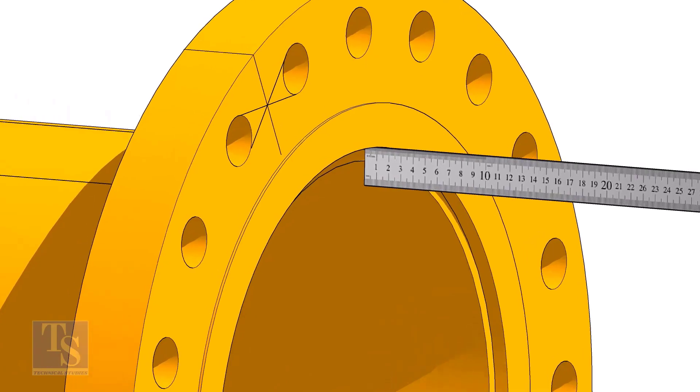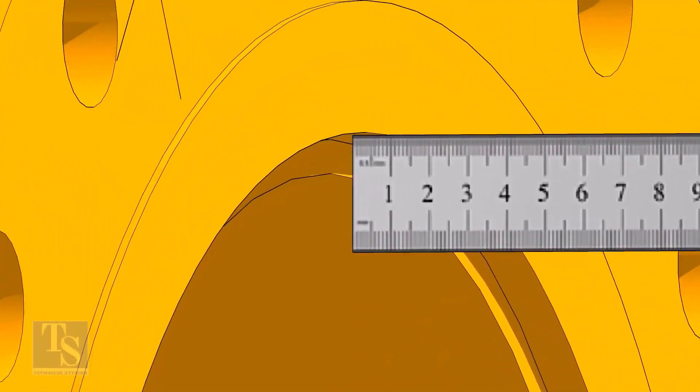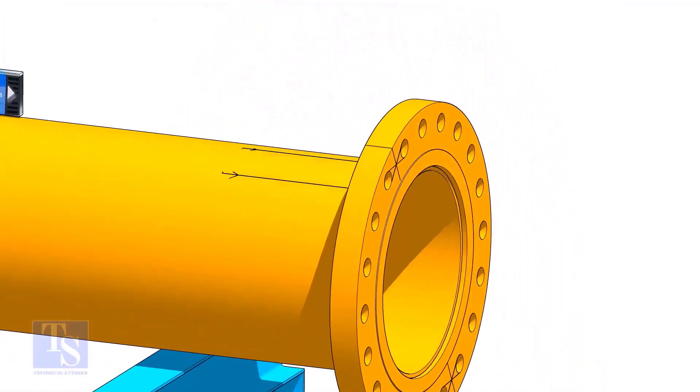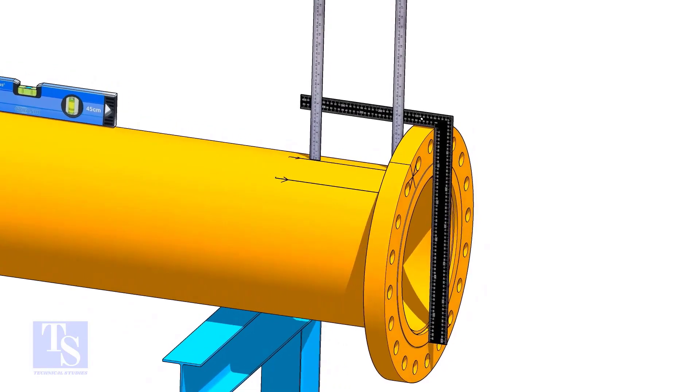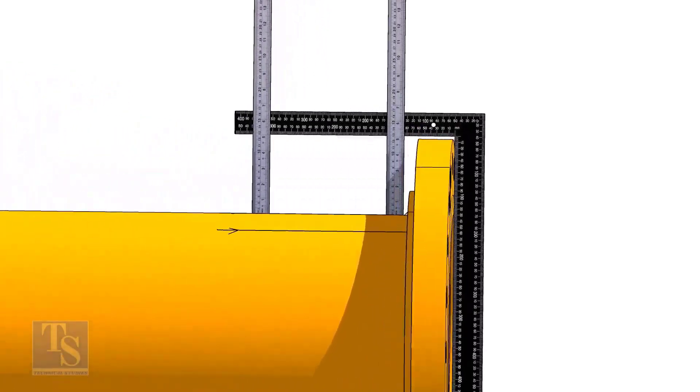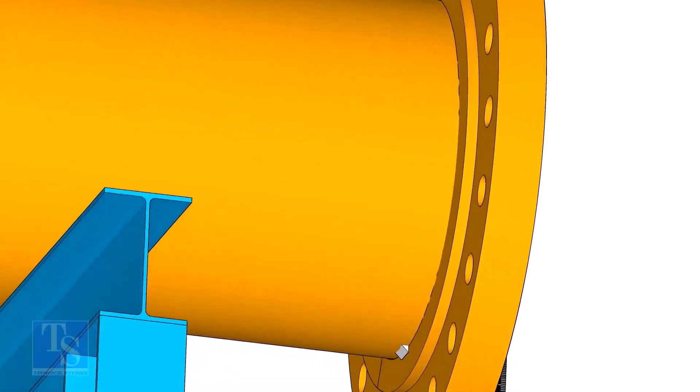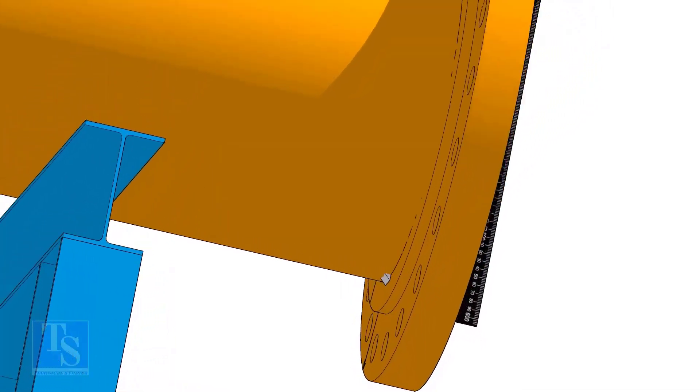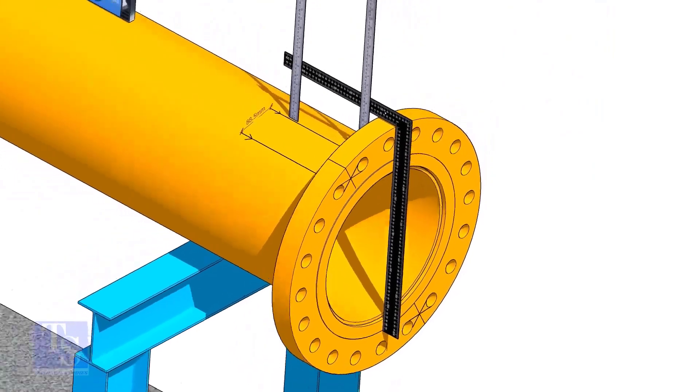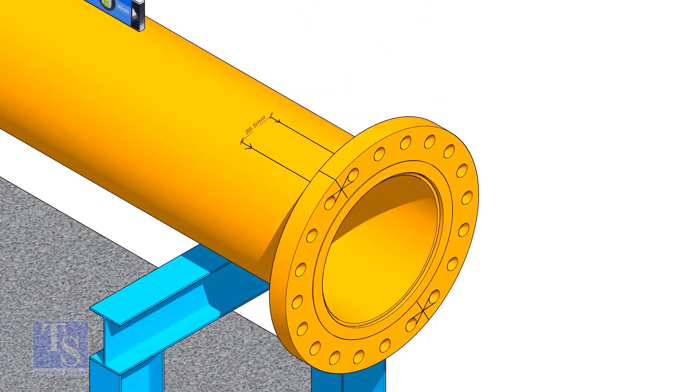Fix the distance between the flange face and the pipe face. Usually, this measurement is equal to the thickness of the pipe. Tack weld on the top of the pipe with the flange and check the squareness. If correct, tack weld at the bottom side also. Now, maintain the squareness of the opposite side and tack weld on both sides.